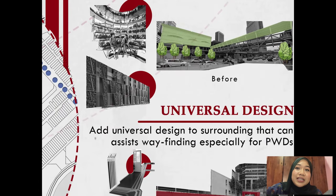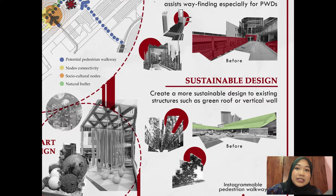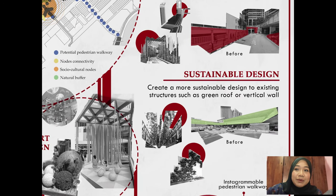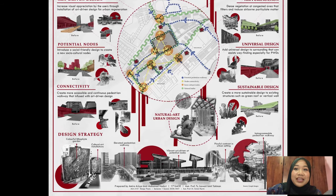Fifth, universal design needs to be added to the surroundings to assist wayfinding, especially for persons with disabilities. Examples include coloured floor tiles that indicate the way to certain areas. For visually impaired users, approaches include having a continuous tactile path or fragrant vegetation along the path for sensory-assisted wayfinding. Lastly, to create more sustainable design to existing structures, including green roofs or vertical garden walls that require less maintenance. To sum up, these six main design potentials point toward a natural art urban design approach. That concludes my overall presentation. Thank you for your attention.